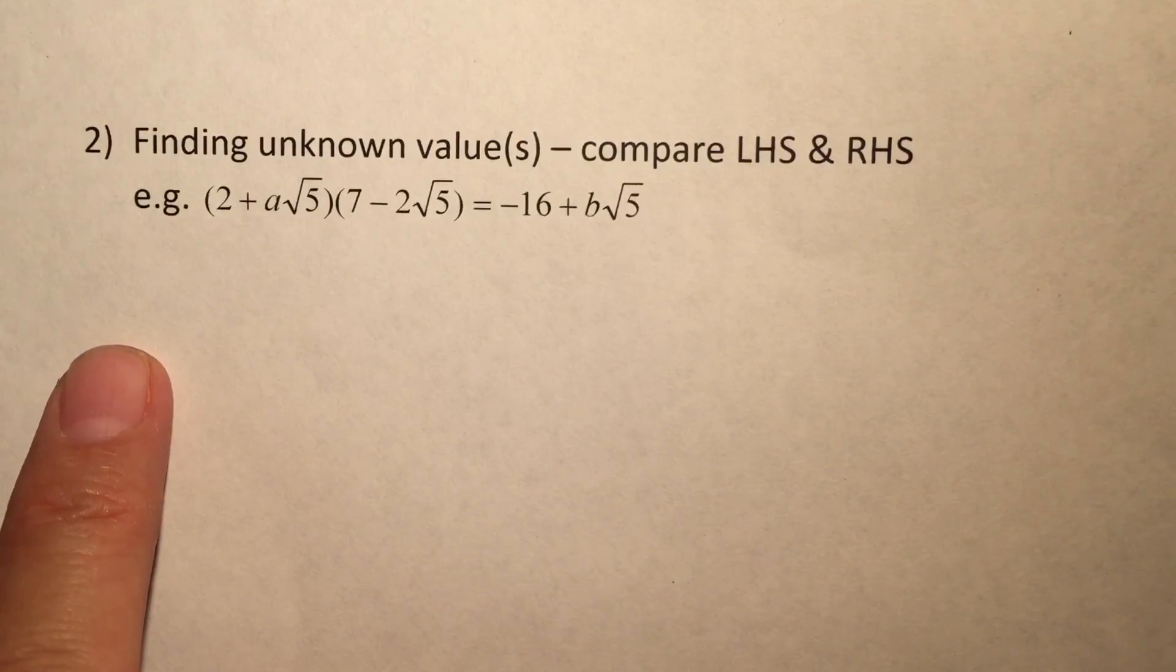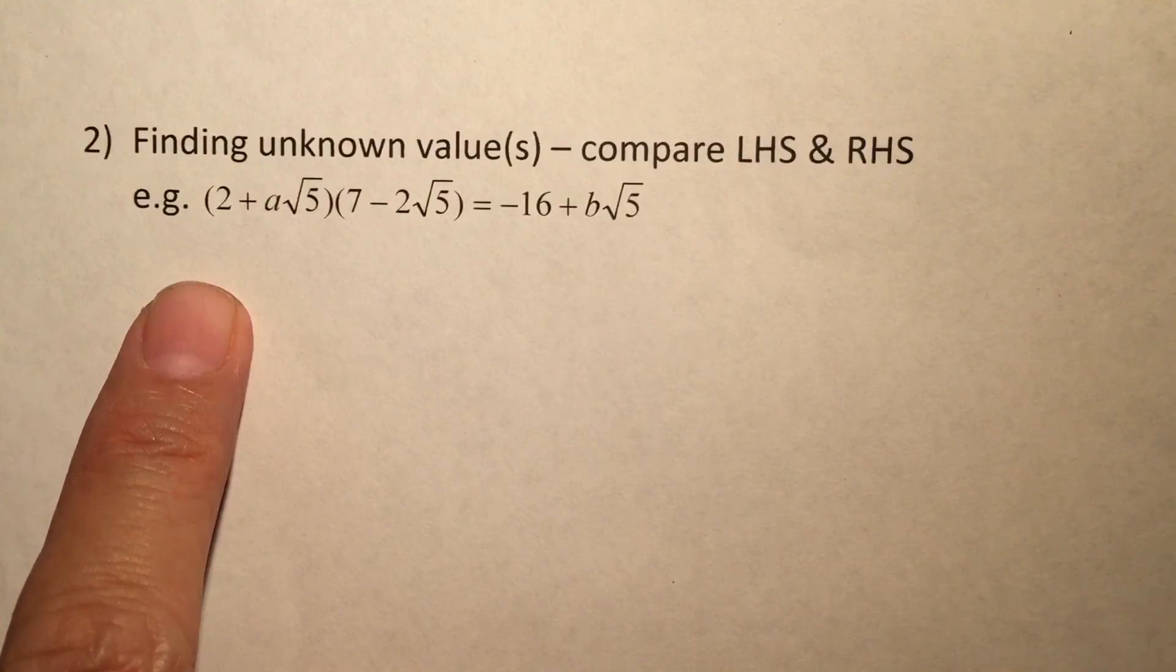Now we have already learned how to do simplifying of surd terms by using the concept of rationalizing. Now we will go through the second type of question where we are actually looking for an unknown value, maybe A, maybe B, it can be anything.